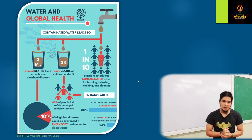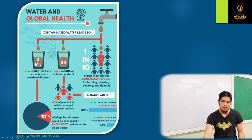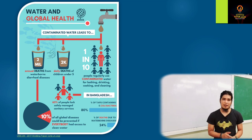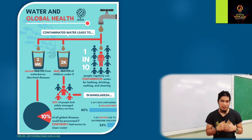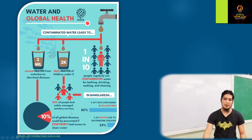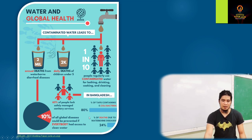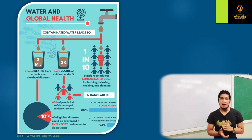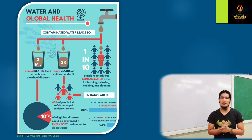On water and global health: contaminated water leads to 2,000 daily deaths of children under 5, and 2 million annual deaths from waterborne diarrheal diseases. This tells us that not only the quantity of water matters, but also its quality — that it's safe for drinking and cooking. Sixty percent of people lack safely managed sanitation services, and 10% of all global diseases could be prevented if everyone had access to clean water.